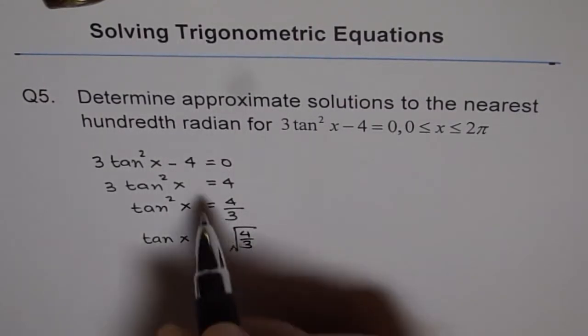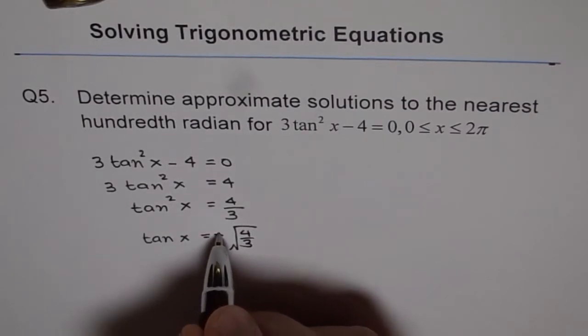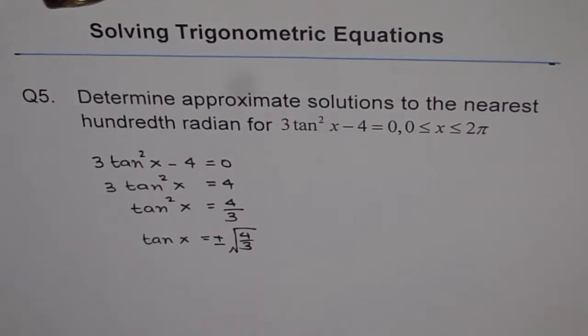Remember, whenever you do square root, you have to write plus and minus because both are your right answers. Square of minus 2 is also 4, square of 2 is also 4. So both plus and minus, remember that.